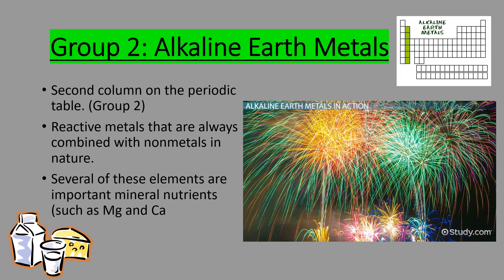Next, we have the group 2 alkaline earth metals. A way to remember the difference: group 1 is 'alkali' — one word — and group 2 is 'alkaline earth' — two words. These are also pretty reactive metals; they have two valence electrons they need to get rid of, so they're not quite as reactive as group 1, but still pretty reactive. They're always combined with nonmetals in nature. Several are important mineral nutrients like magnesium and calcium — good for your bones and teeth. They're also used in fireworks because when they drop from a higher to a lower energy level, they give off pretty colors of light.